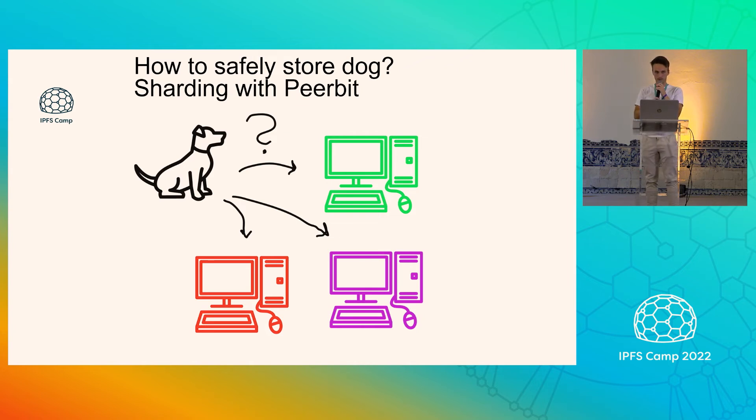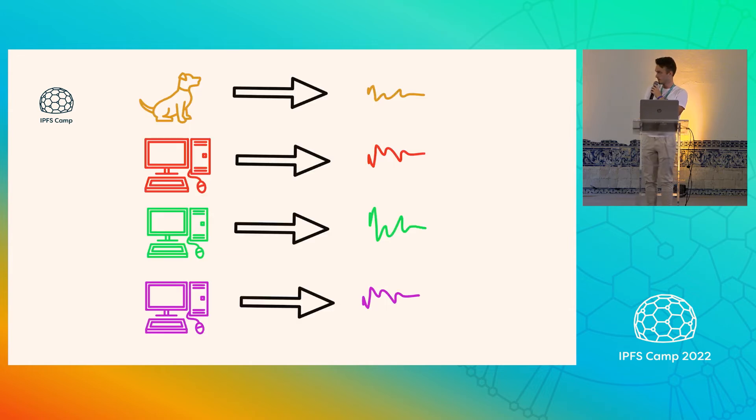So what we developed is a leader selection routine based on the content. And it's pretty simple. So I'm going to go through it with you. So the goal is to find, given the dog, you want to find what computers are going to store it. And every computer has a label. That's the peer ID, which we are familiar with. And the dog has a label, which is the hash of it when you store it. So what we do is that we hash the labels of the computers or the peers and the dog with the same hash function.